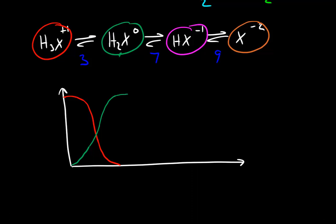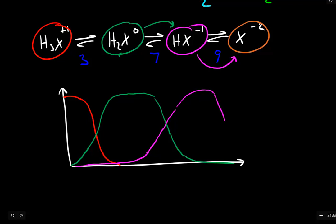It maximizes. And then as we continue to become more basic, we start converting H2X to HX. So this starts to drop off. And as it drops off, the concentration of HX starts to pick up. HX will subsequently be converted to X-2. So its concentration will fall as the concentration of our last chemical species increases. So these speciation curves will always look like this. As one chemical species is dropping, the next one is increasing. It will maximize, it will start to drop, and the next one starts to form.